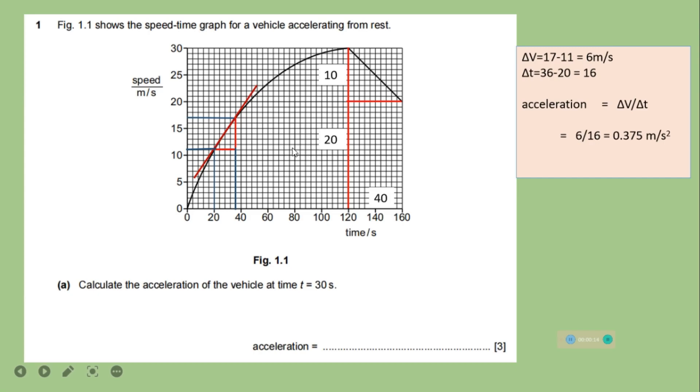This figure shows a speed-time graph for a vehicle accelerating from rest. Calculate the acceleration of the vehicle at time t equals 30 seconds. So we have to draw a tangent at that given time and we have to calculate the gradient here.